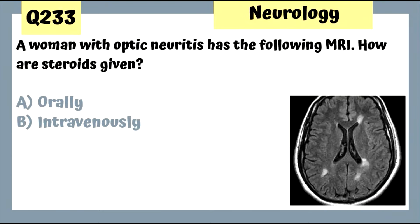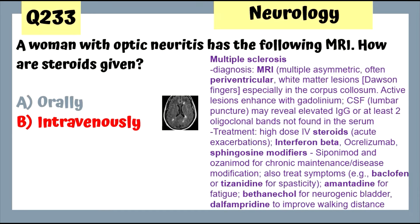Question 233: A woman with optic neuritis has an MRI consistent with multiple sclerosis. Steroids are given intravenously for MS. MS presents with periventricular white matter lesions on MRI. Treat symptoms with baclofen or tizanidine for spasticity, amantadine for fatigue, bethanechol for neurogenic bladder, and dalfampridine to improve walking distance.